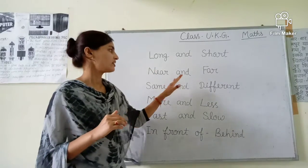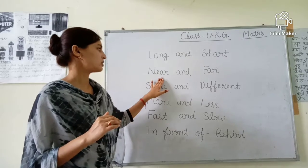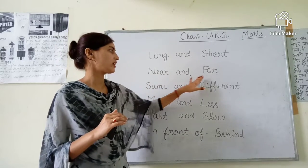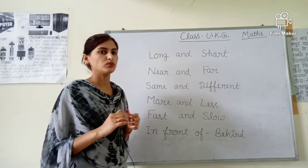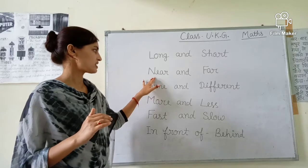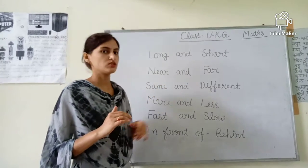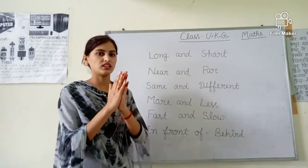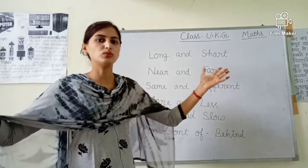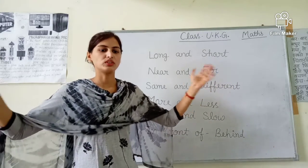Near and far. Second kya hai — near means pass and far means dur. Near means pass and far means dur. Near means dekhi hai — ye hai pass, dur. Far means hota hai dur.